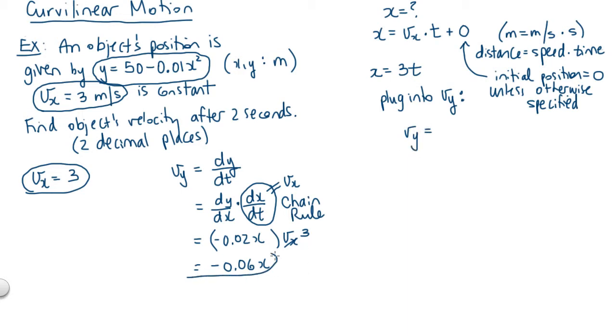Going back, vy was equal to negative 0.06 times x. If we replace x with 3t, then we've got vy equals negative 0.18 times t. So there's our expression for vy.